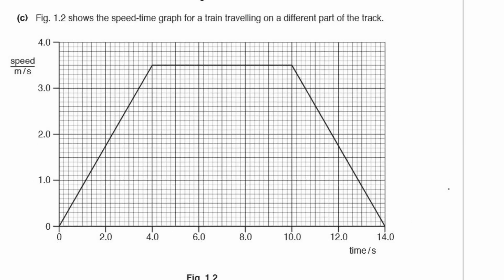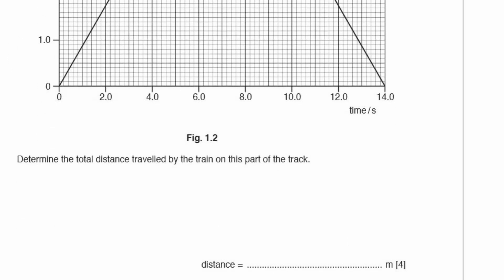Part C: figure 1.2 shows a speed-time graph for a train travelling on a different part of the track. Determine the total distance travelled by the train on this part of the track. It's a speed-time graph — what we need to write down, because we're writing down our working out, is that the distance travelled is the area under a speed-time graph.